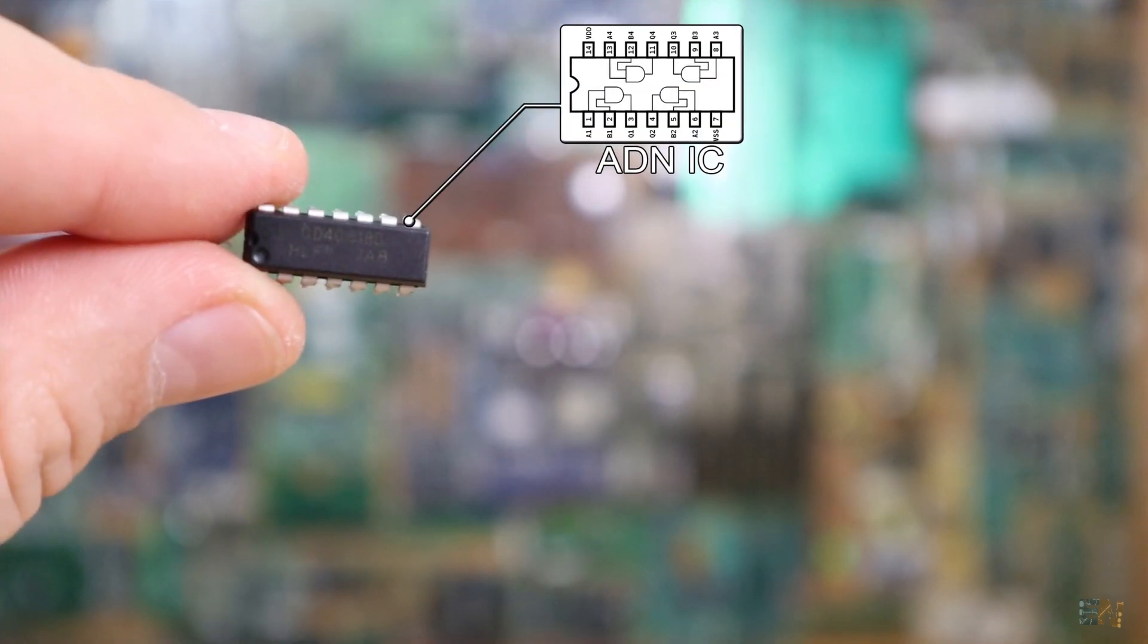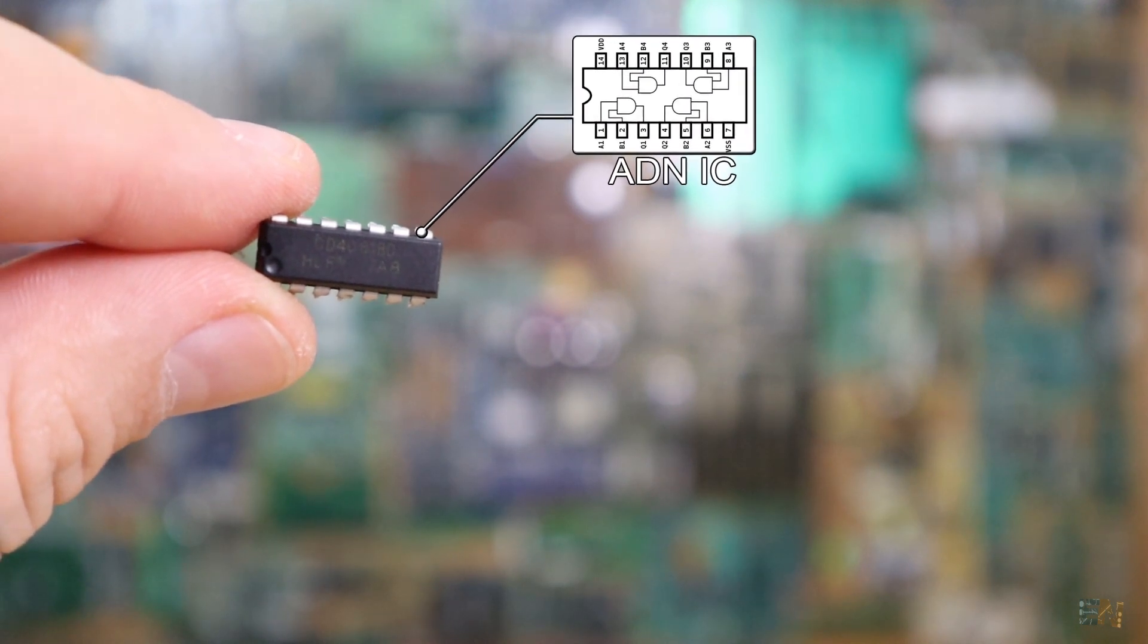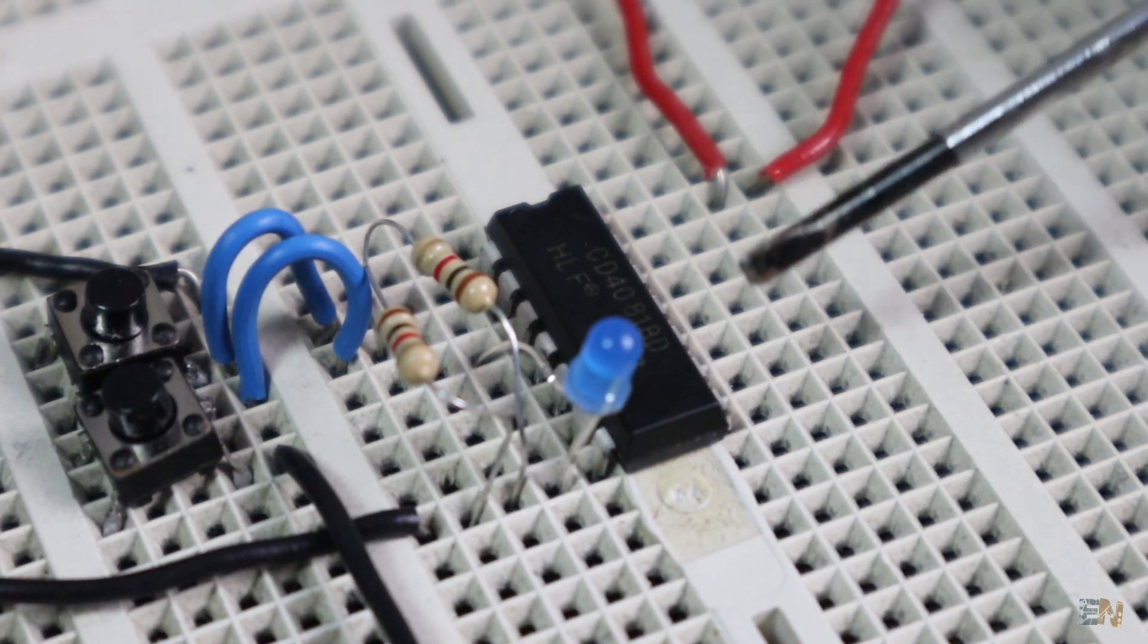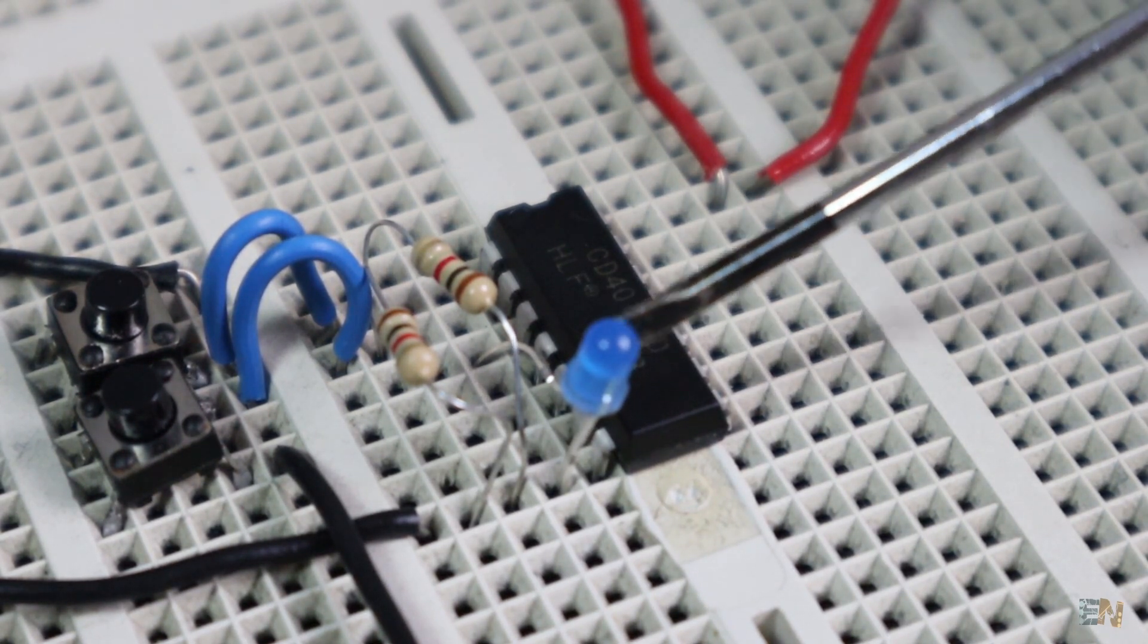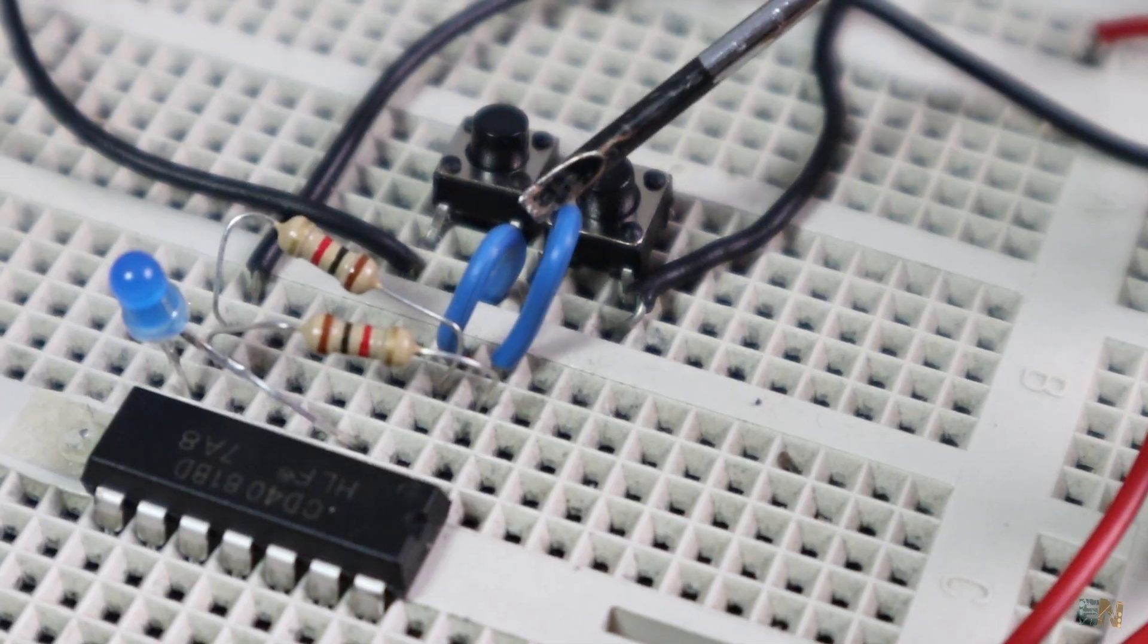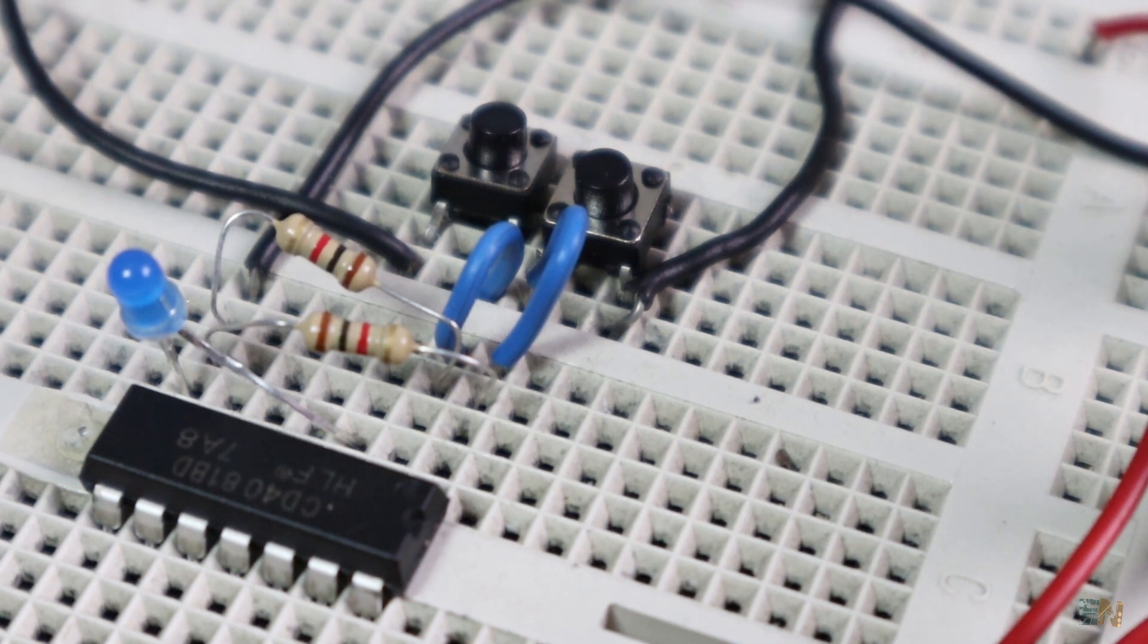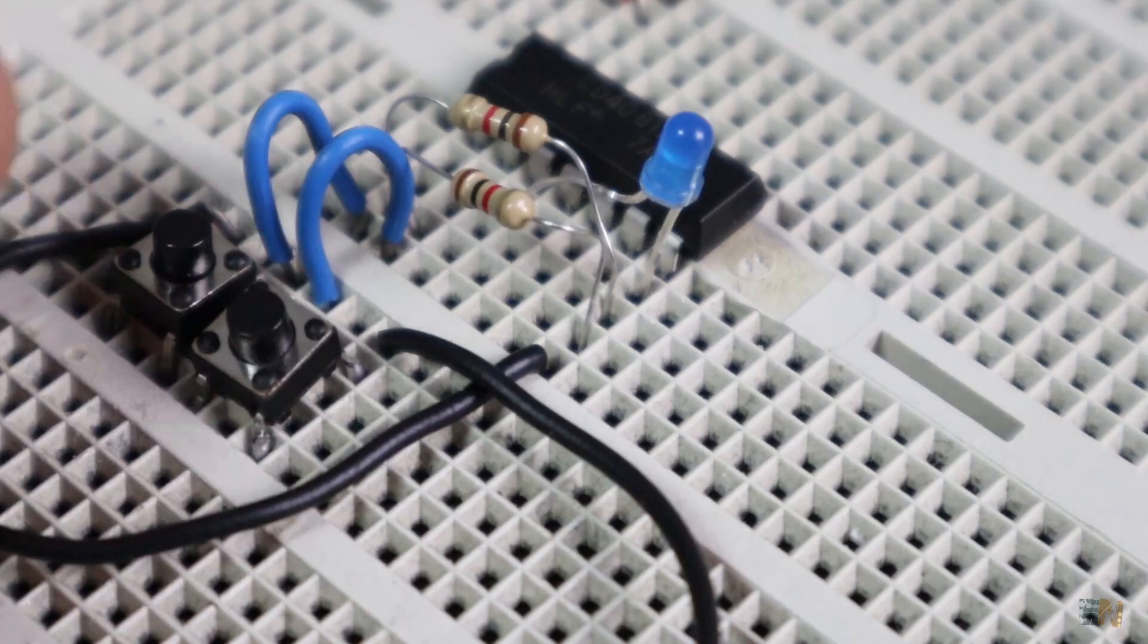Here I have the CD4081BE integrated chip that has 4 AND gates. I supply 5V and ground. Connect an LED to the output and add a pull down to each of the inputs of the first AND gate. Then I connect one push button between the input and 5V. So each time I press one of the buttons, the input will be high and low in the rest of the time.